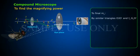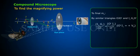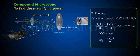To find M₀, by similar triangles OJO' and I₁G₁O': I₁G₁/OJ = O'I₁/O'O. O'I₁ = +V₀, O'O = -U₀. Therefore, M₀ = V₀/U₀.